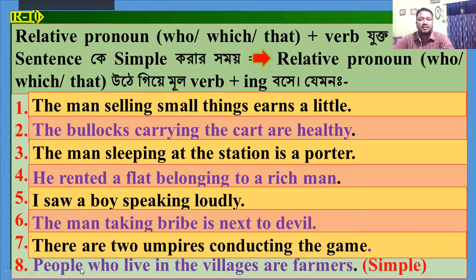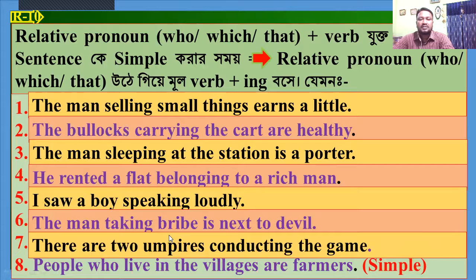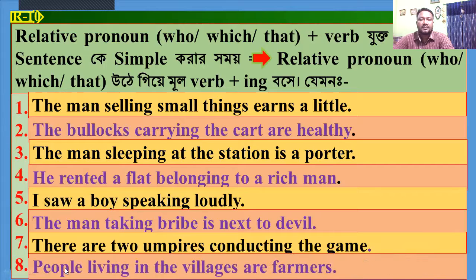Number 8: 'People who live in the villages are farmers.' Make it simple. Here, 'who' is the relative pronoun and 'live' is the principal part. So, the answer will be: 'People living in the villages are farmers.'